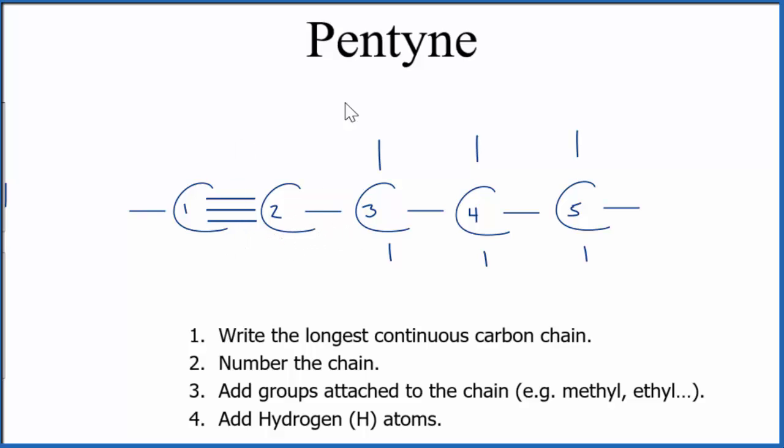So this would be the formula for pentyne. We would call this 1-pentyne because the triple bond is on the first carbon. If the triple bond was on the second carbon like this, and here we need to move these carbons, so this carbon has four bonds and this carbon only has four bonds. This would be called 2-pentyne because the triple bond is on the second carbon.